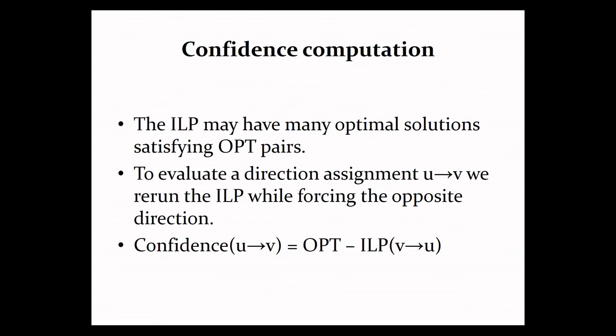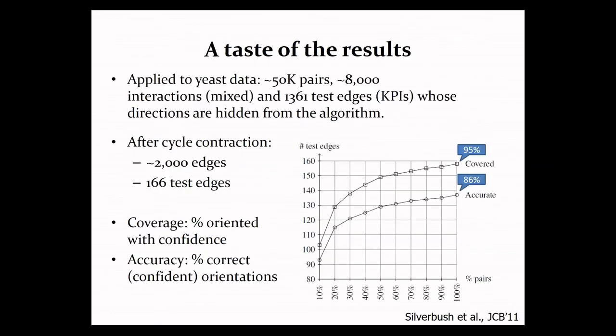And now I can give you a taste of the results of this algorithm. So we apply this algorithm to data from yeast. We had 50,000 knockout pairs that come from knockout expression experiments. We applied to a very reliable network that contained about 8,000 edges, both directed and undirected, as well as 1300 test edges between kinases and phosphatases to their substrates that refer to the algorithm as undirected and we use them to test its performance.